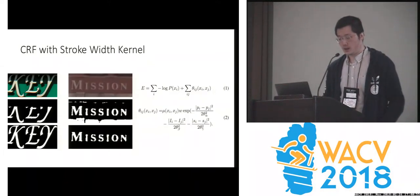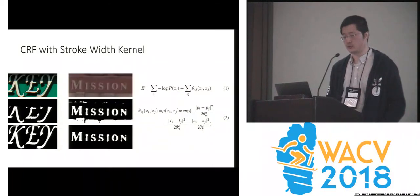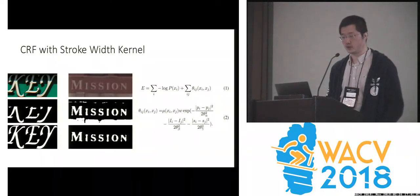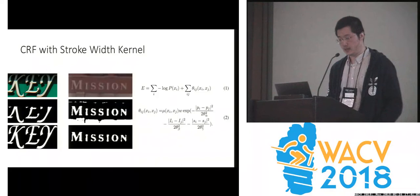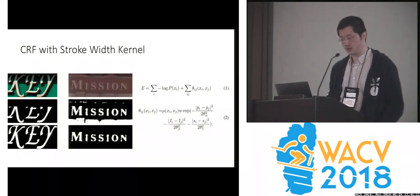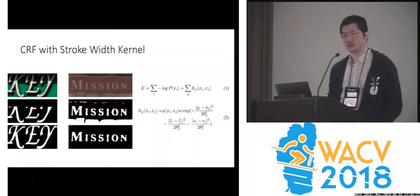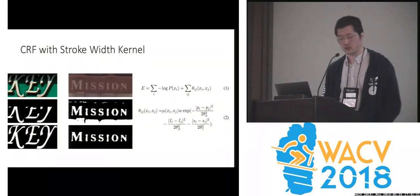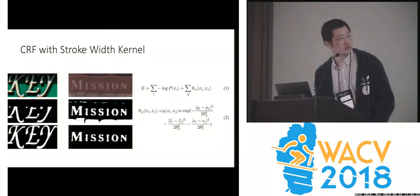At the beginning, we tried the fully connected CRF with a traditional bilateral filter. We found the result is not good enough in the presence of dramatic illumination change, for example shadow and reflection. Moreover, sometimes the CRF will classify background pixels with similar color as text pixels, misidentifying them as text regions, as shown in the middle row.